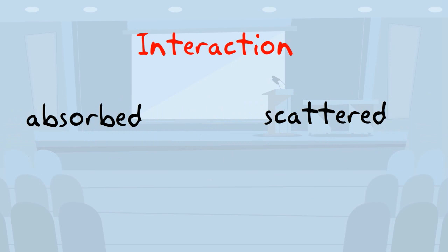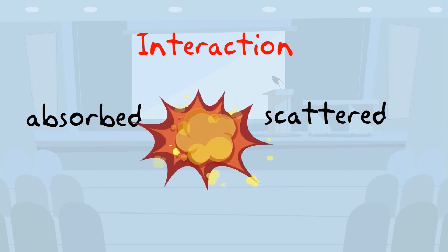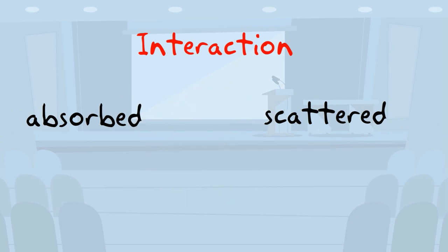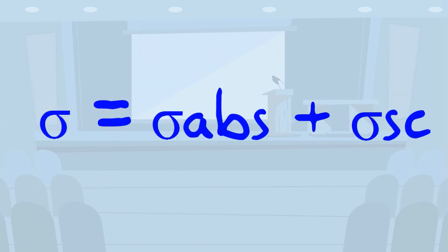Neutrons are either absorbed or scattered during these instances. Because of the quantum nature of neutrons, these interactions could happen with different probabilities. This property is defined as the microscopic cross-section.